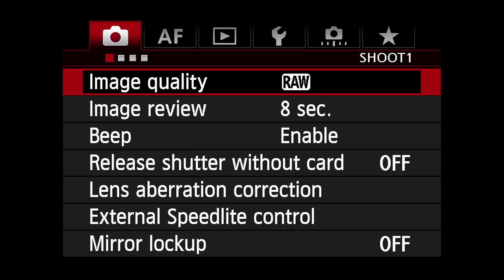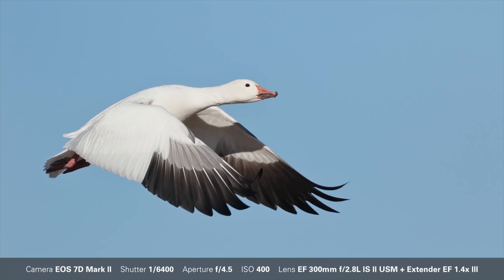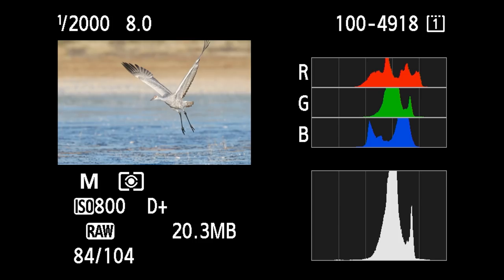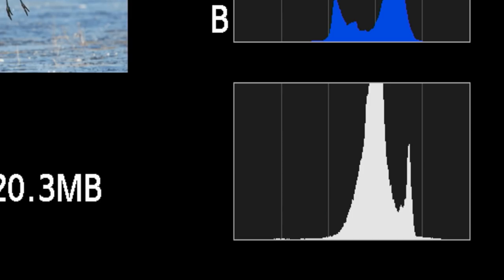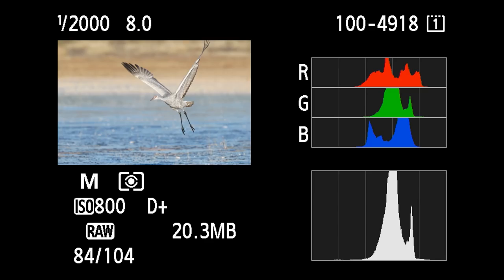If you're using RAW capture, as we do 100% of the time, you can tolerate a few blinkies which are usually easily recovered. The basic trick that people are missing with getting the right exposure is learning to read and evaluate their histograms. Your histogram is divided into five boxes — dark tones are all the way on the left and bright highlights are all the way on the right. The trick to getting the right exposure with digital is to get some data in the fifth box of the histogram all the time.